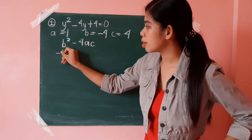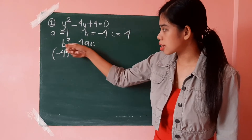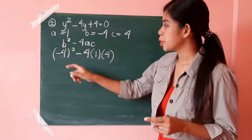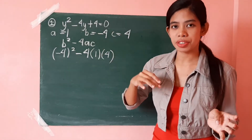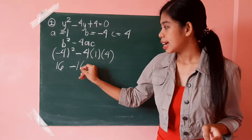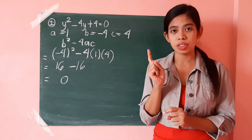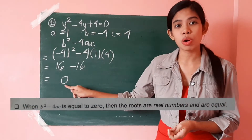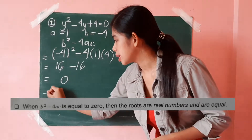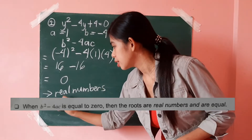Now we substitute into the discriminant. The value of b is negative 4, and since it is squared, we have negative 4 squared minus 4 times 1 times 4. Simplifying: negative 4 squared is positive 16. Negative 4 times 1 times 4 is negative 16. And 16 minus 16 equals 0. Going back to the first condition, when b squared minus 4ac equals 0, we can say that the roots of the given quadratic equation are real numbers and are equal.